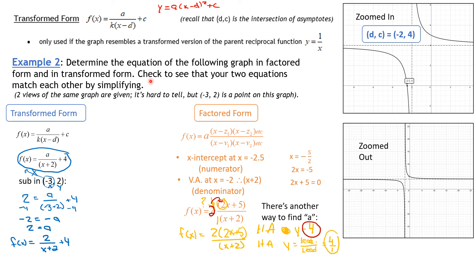We had another piece in the question: check to see that your two equations match each other by simplifying. Here's my transformed form and here's my factored form. Right now the only thing that looks the same is the denominator — the numerator does not look the same at all. So we're going to check by expanding both. Starting with the factored form — expanding gives me 4x + 10 over (x + 2).